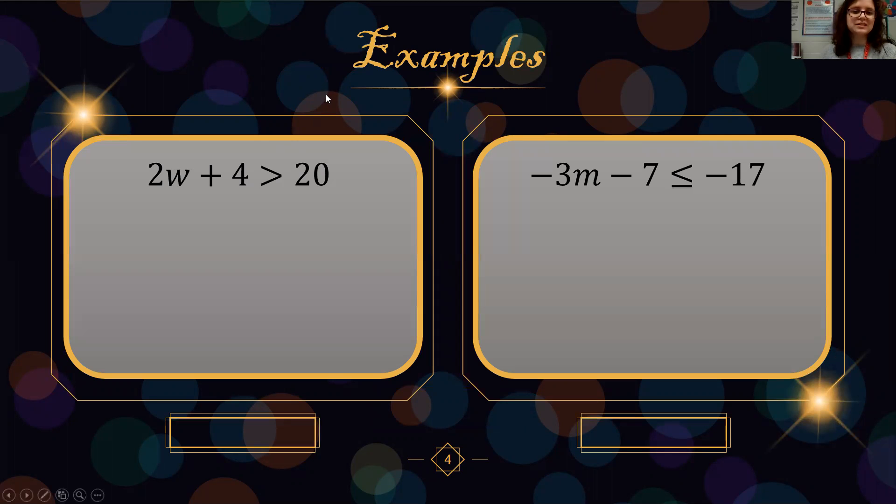Just like we did with equations, we want to split our two sides and circle our variable. This helps us know which side to work on and helps us figure out which number to start working with. We want to start with the number furthest away from the variable, and that would be the four. We undo addition with subtraction.